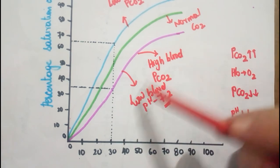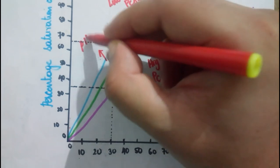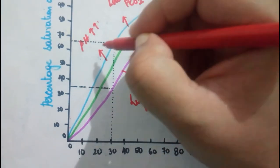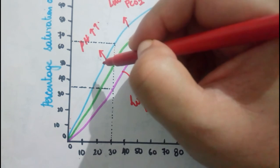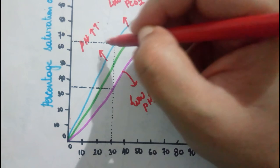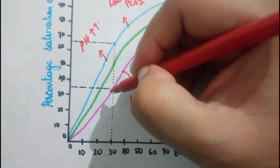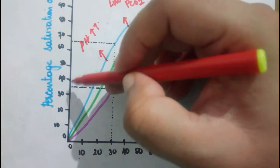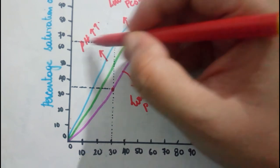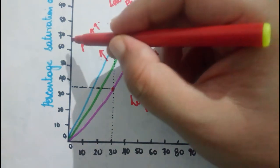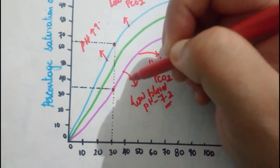When pH is high — alkaline pH — the association of oxygen and hemoglobin is greater, so saturation increases and the curve shifts to the left. At the same partial pressure of oxygen, say 30 mmHg, at low pH the saturation is only 35%, but at high pH the saturation is 65%. This demonstrates the rightward shift at low pH and leftward shift at high pH.